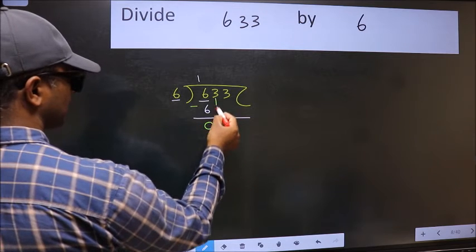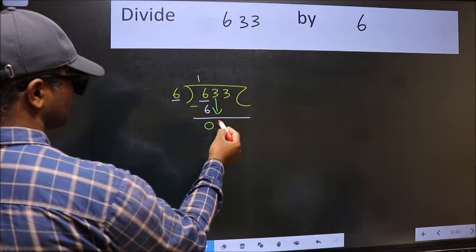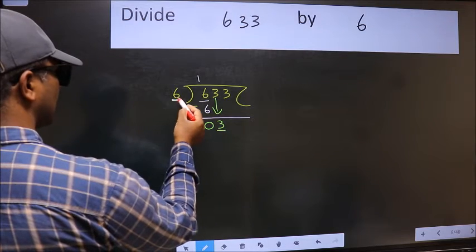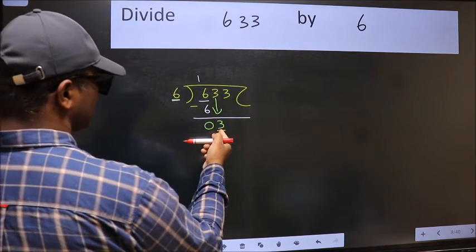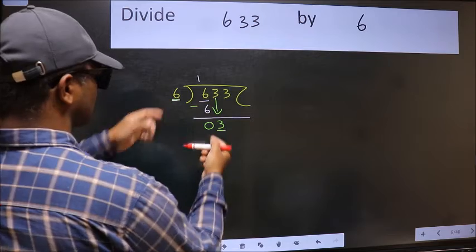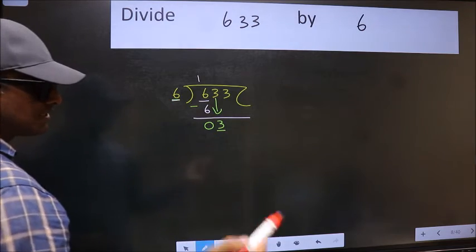After this, bring down the beside number. So 3 down. Now here we have 3 and here 6. 3 is smaller than 6. So we should bring down the second number.